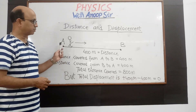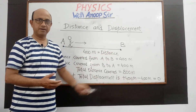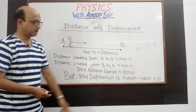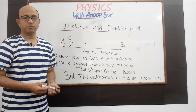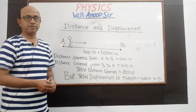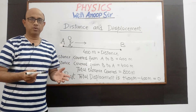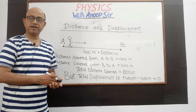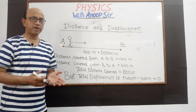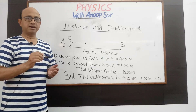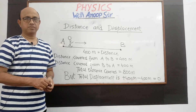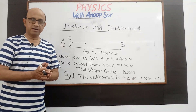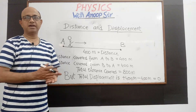इस concern में देखें तो जाते समय man का displacement है plus 400, लेकिन जब वो वापस आ रहा है तो displacement होगा minus 400, तो resultant total displacement will be 0. क्योंकि distance एक scalar quantity है और displacement एक vector quantity है — displacement का relation direction से होता है। Displacement में दो चीज़ें होती हैं: distance covered जो इसका magnitude है, as well as the direction.